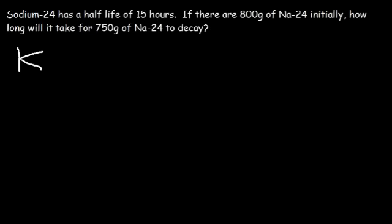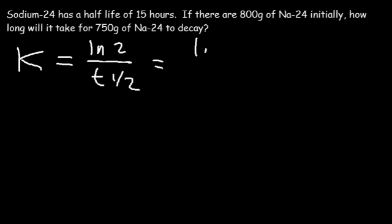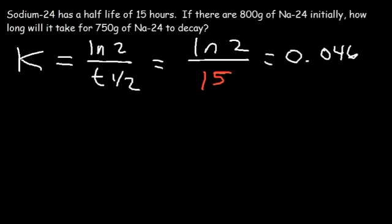Now let's use an equation to get the same answer. First, find the rate constant K, which is the natural log of 2 divided by the half-life. ln(2) = 0.6931 divided by a half-life of 15 hours gives 0.04621. That's the rate constant K.